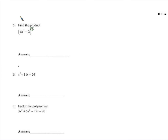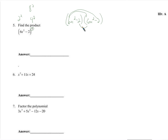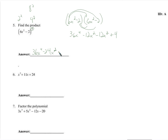Remember that squaring something means multiplying it by itself: 2 squared means 2 times 2, 4 squared means 4 times 4. So 6x squared minus 2, squared, means 6x squared minus 2 times 6x squared minus 2. Written out that way, we distribute the 6x squared and the negative 2 and collect like terms. We get 36x to the 4th. Then 6x squared times negative 2 is negative 12x squared, and we get another negative 12x squared. Negative 2 times negative 2 is positive 4. Collecting like terms: 36x to the 4th minus 24x squared plus 4.